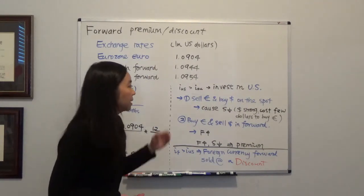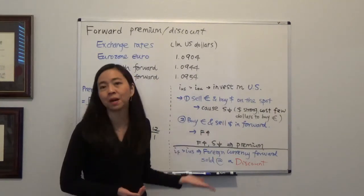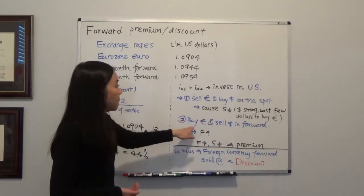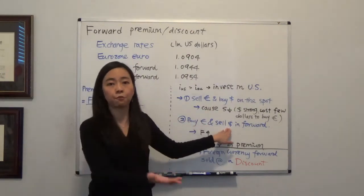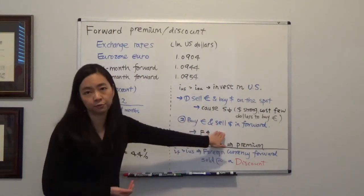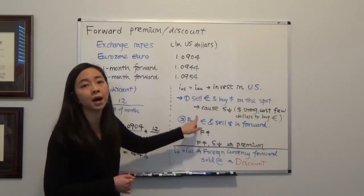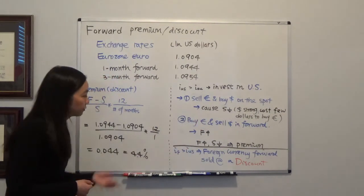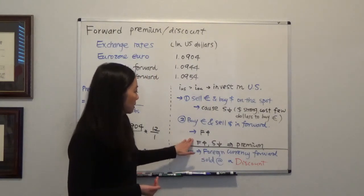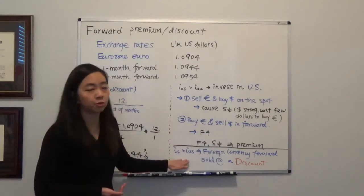And at the same time after they invest one month they would not want to keep their money in the States. In fact they want their euros back. Therefore they are going to buy euro and sell dollar in the forward market and lock in the rate a month before. That is going to cause the forward rate to go up. Therefore the forward rate goes up, spot rate goes down. So the euro forward is being sold at a premium.